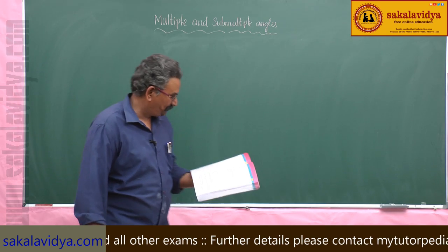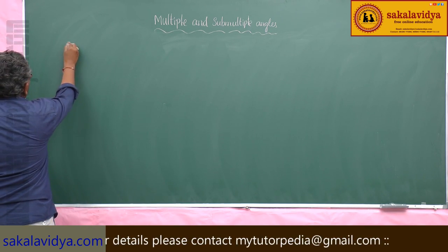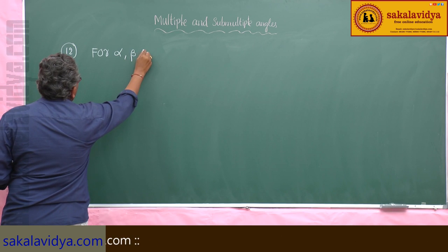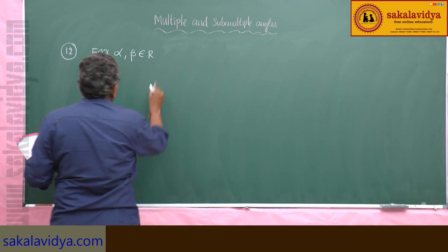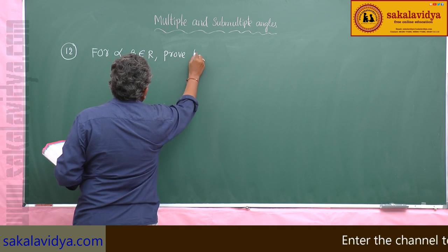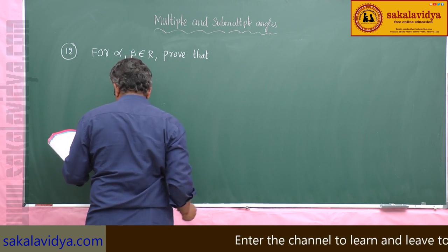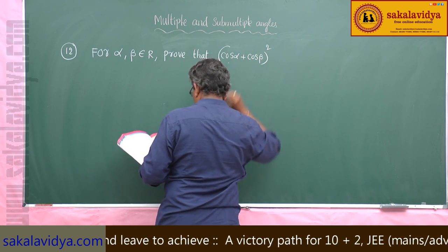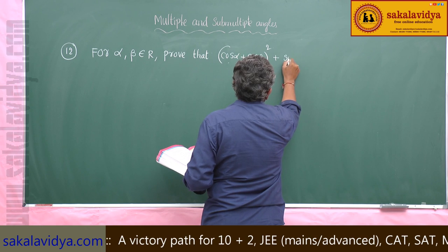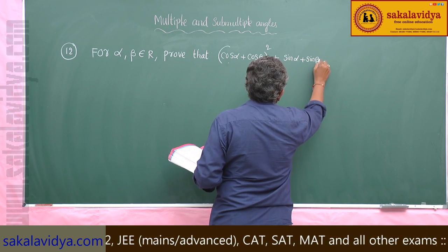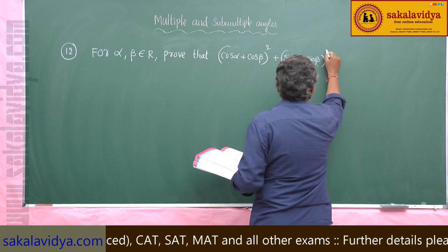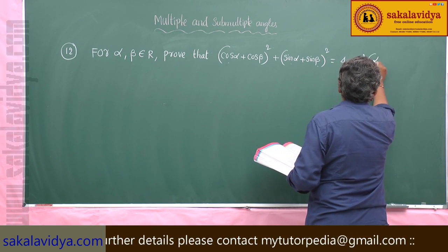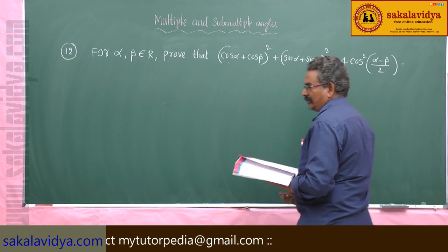12th problem: for α, β belonging to ℝ, prove that (cos α + cos β)² + (sin α + sin β)² = 4cos²((α - β)/2).